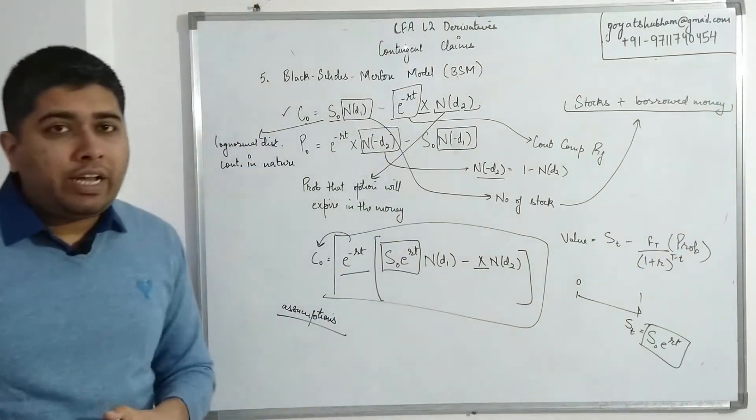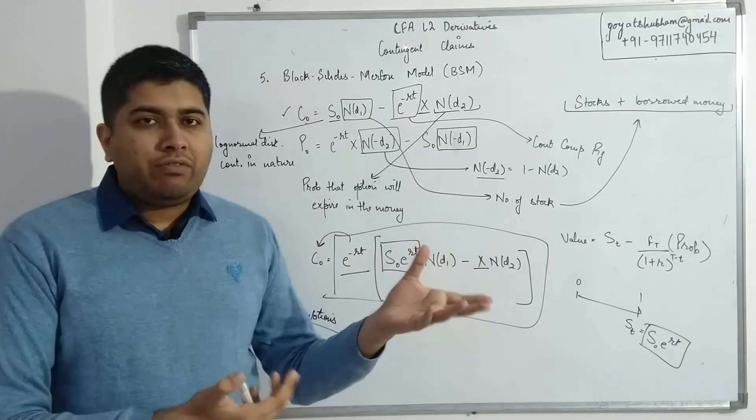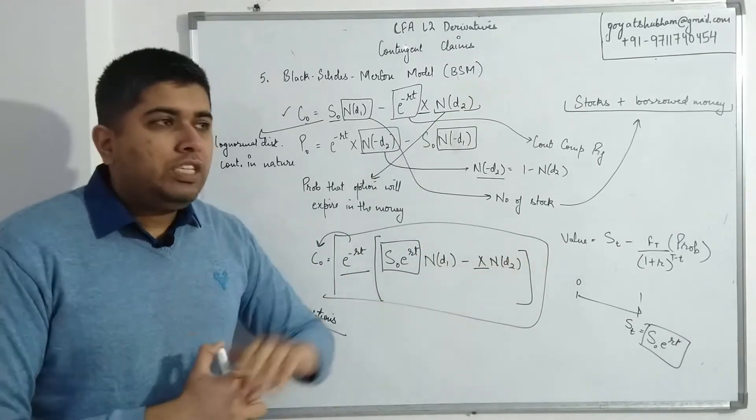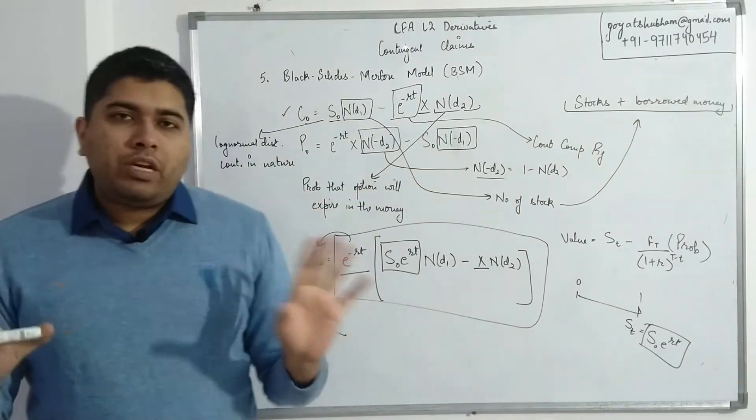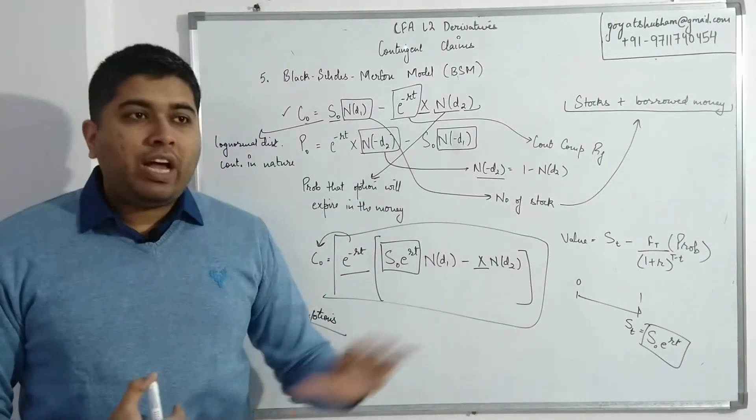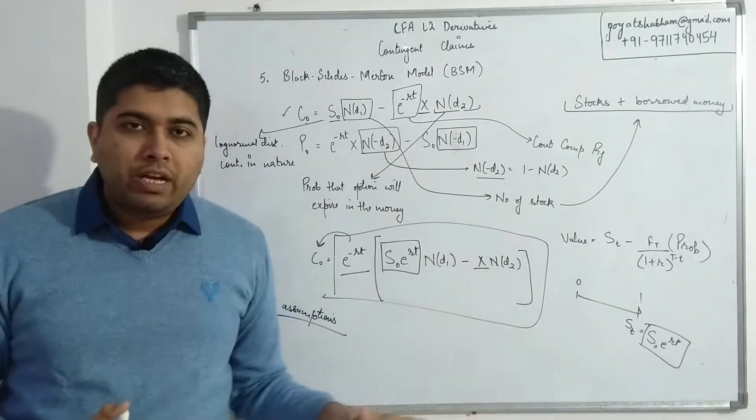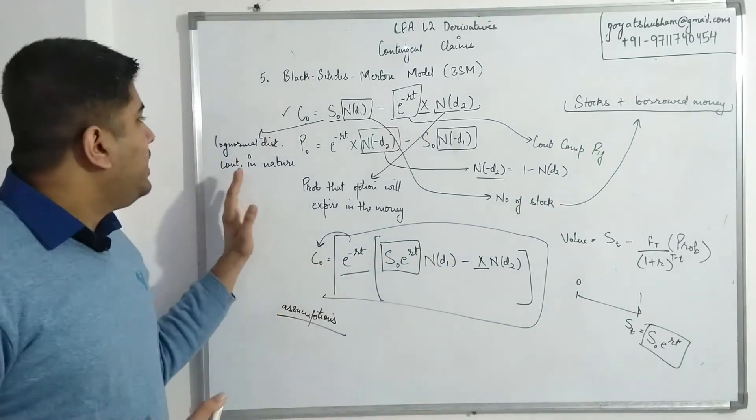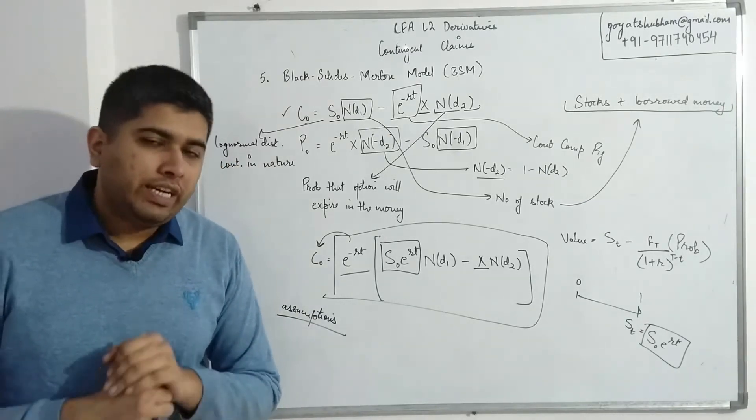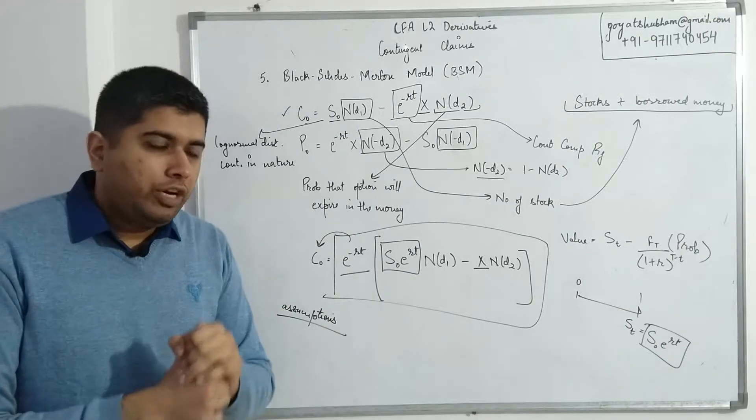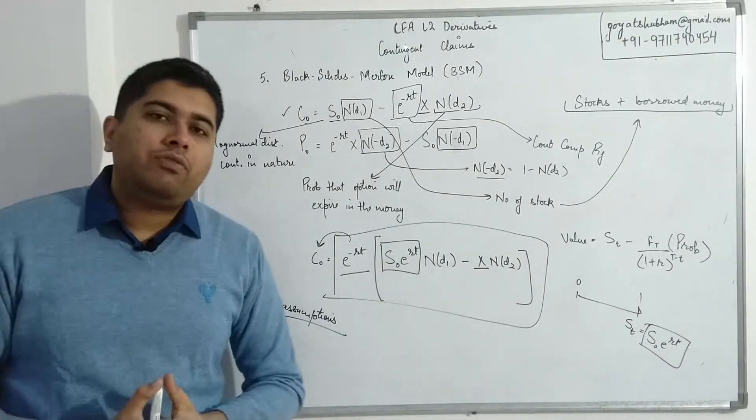If you remember in case of binomial model, we had time 0, then we had time 1, and the price was moving from 100 all the way to 125—it was not a gradual move, it was a jump. The first assumption of BSM model is jumps are not possible. The price, if it has to increase, it will increase in a gradual continuous manner over the entire time. So first thing it is saying is that prices follow a log-normal distribution and they are continuous in nature. The price movement is going to be continuous from one time to the next to the next, and so on forever. For that reason, we use continuous compounding everywhere in the BSM model.